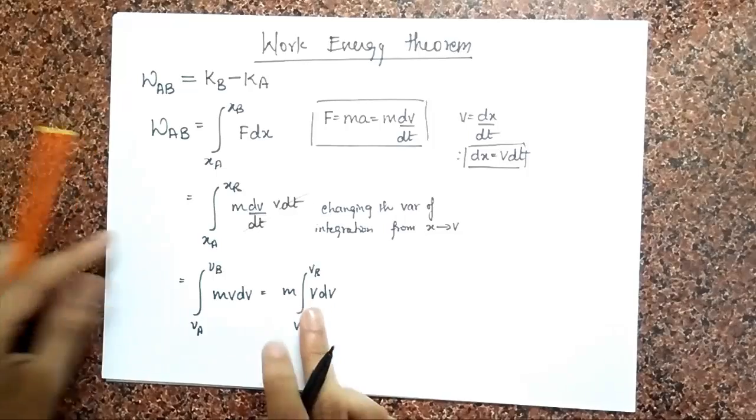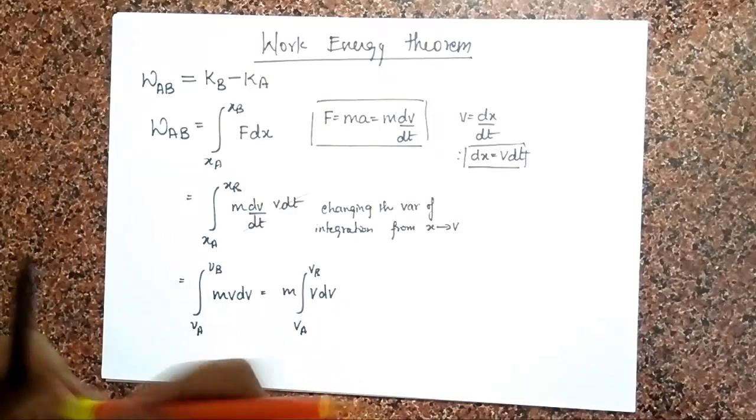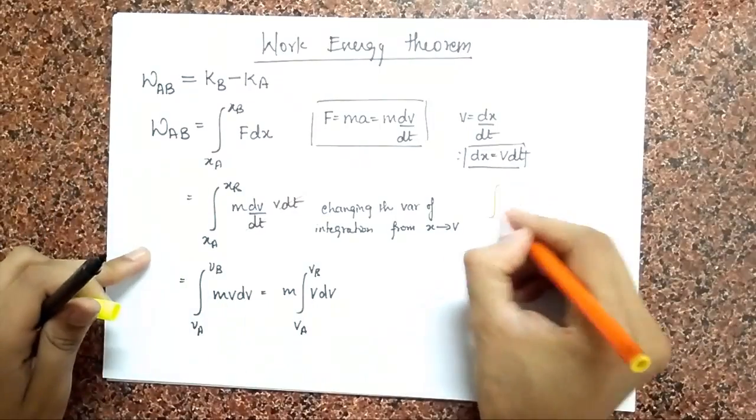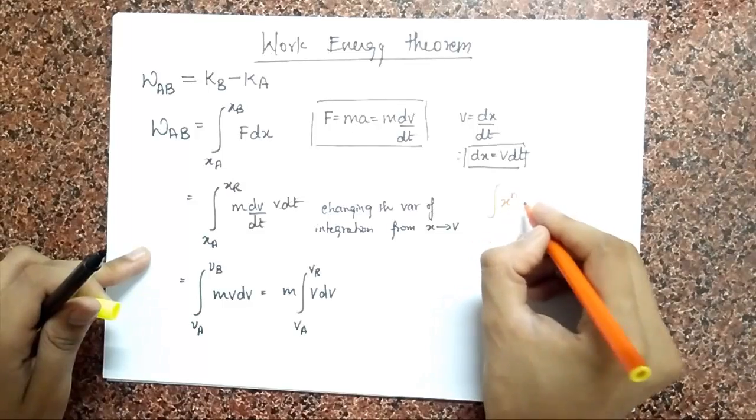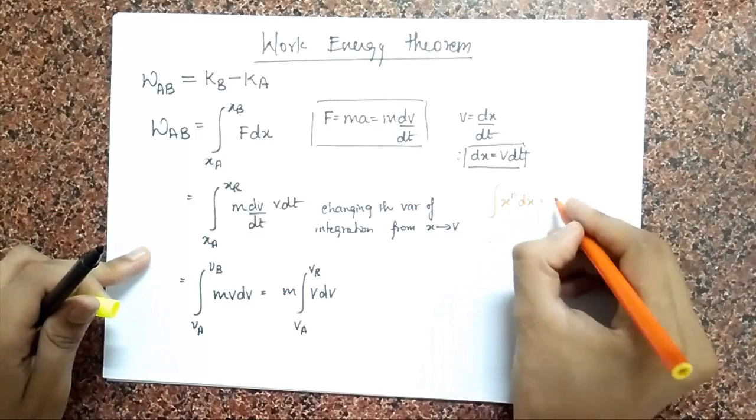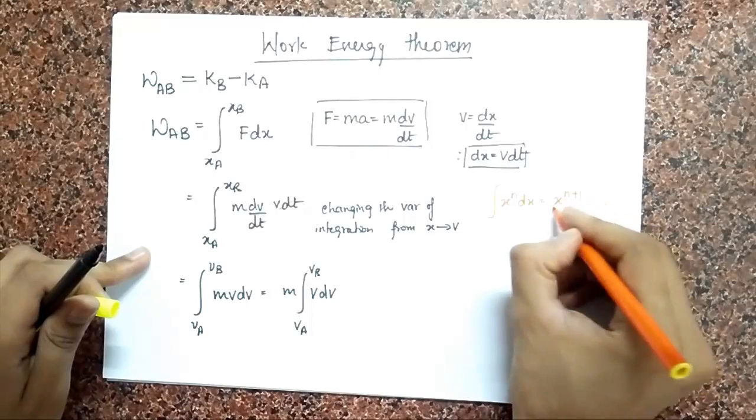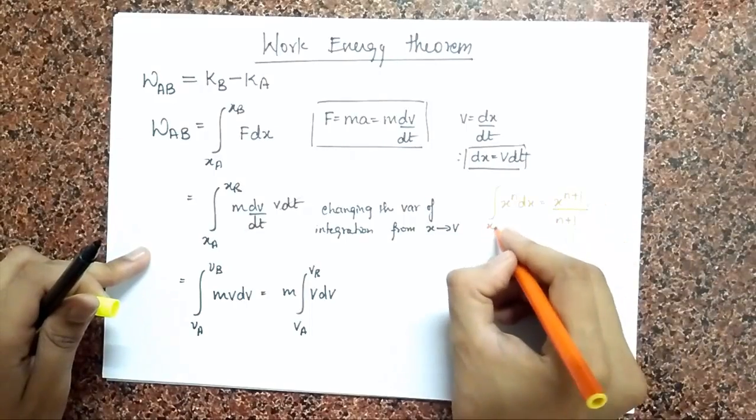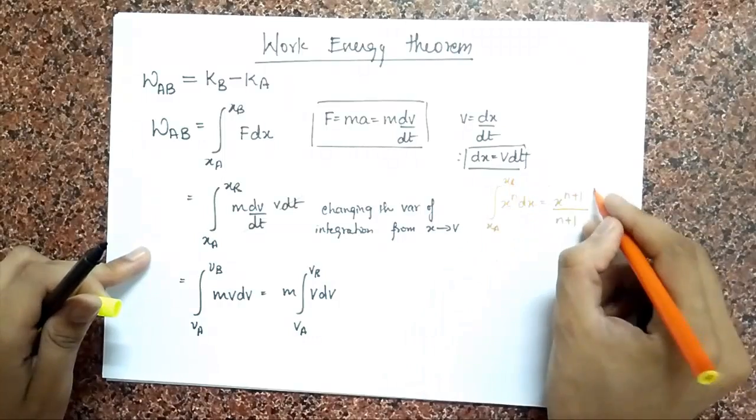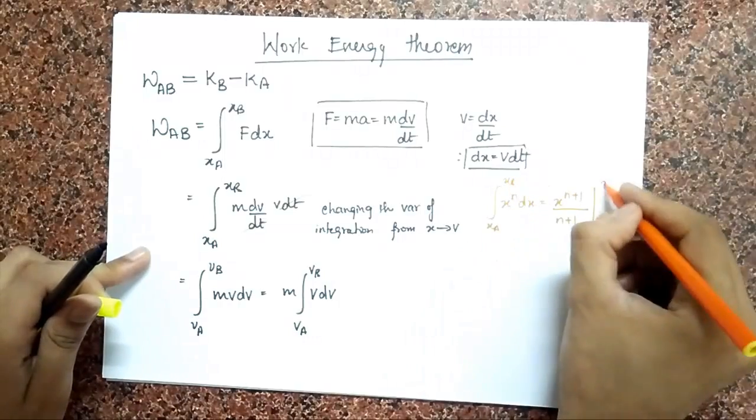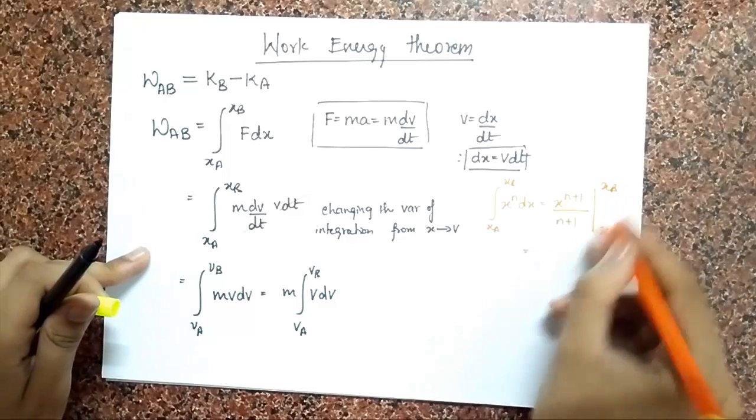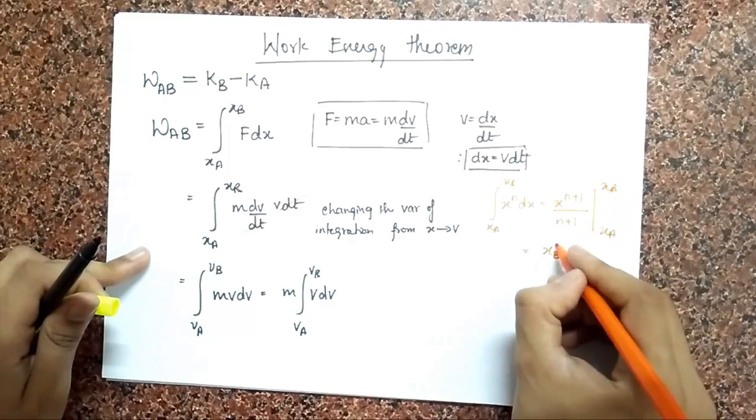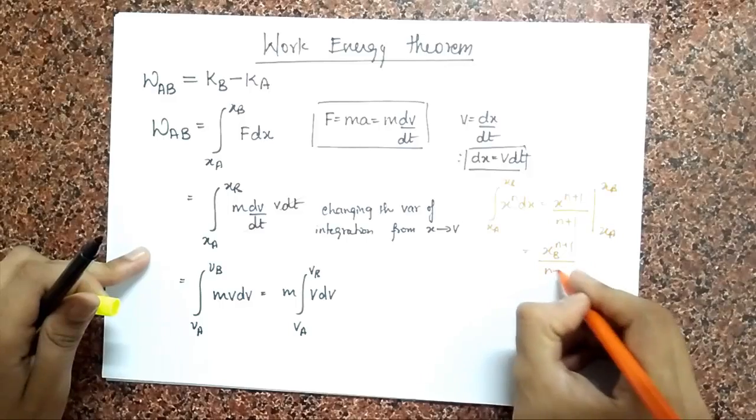And this is now a simple integral. To remind you, the integral of X to the power N dX is always X to the power N plus 1 divided by N plus 1. And if you have some limits here from XA to XB, put a small stick here, write XA and XB, substitute the upper limit first, and then the lower limit.